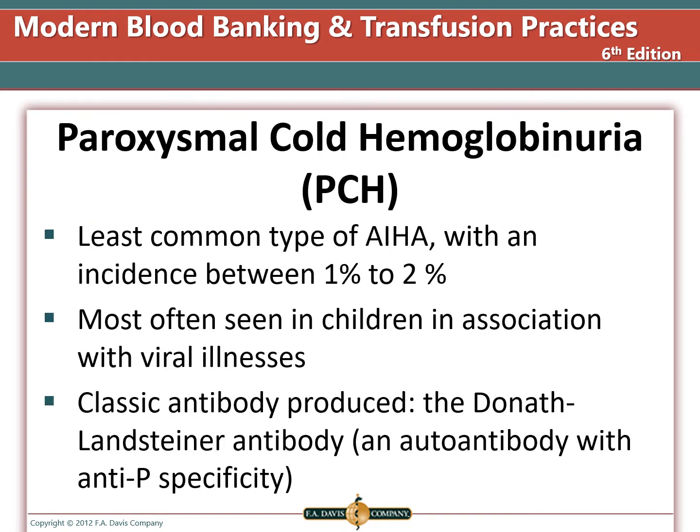Paroxysmal cold hemoglobinuria is the least common type of autoimmune hemolytic anemia, with an incidence between 1 and 2 percent. It is most often seen in children in association with a viral illness. The antibody produced is the Donath-Landsteiner antibody, with an autoantibody specificity.